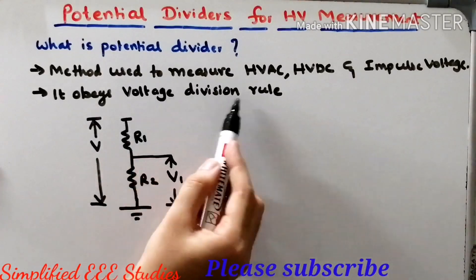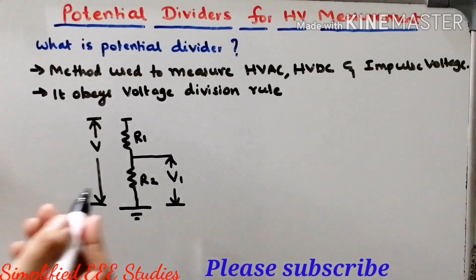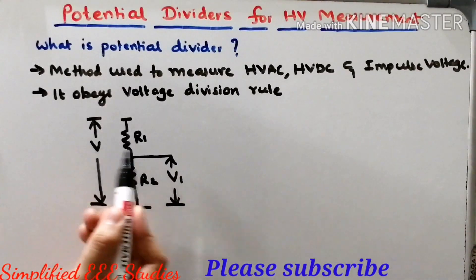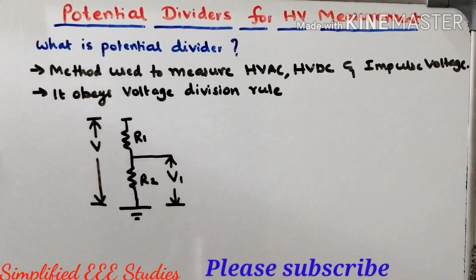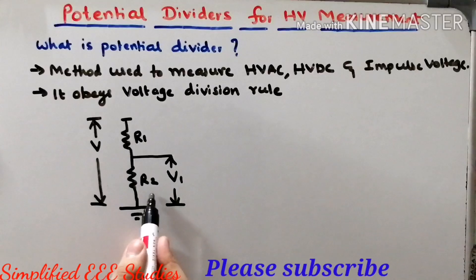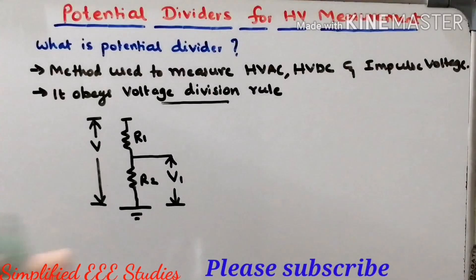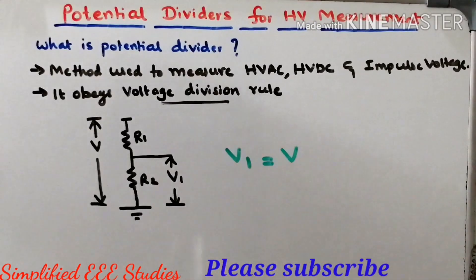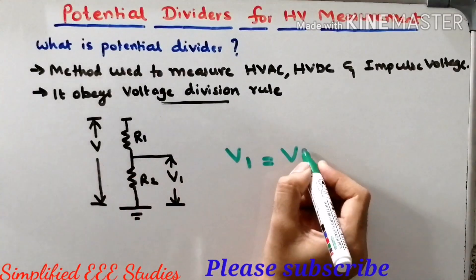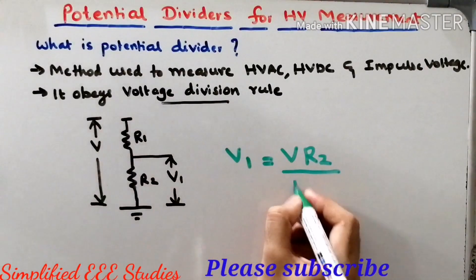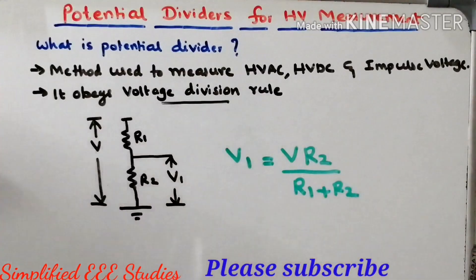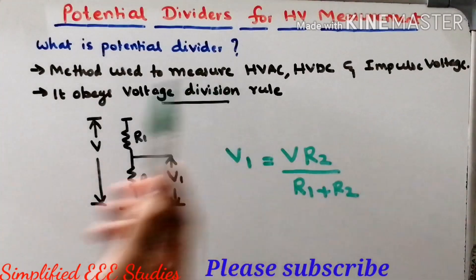Based on the principle of the potential division rule or potential division formula, consider a network shown here. The total voltage V has been divided with the help of resistors R1 and R2. To calculate the voltage across R2, we apply the voltage division formula: V1 equals V multiplied by R2 divided by the total resistance R1 plus R2. By using this formula we can calculate the voltage across R2. This is known as the voltage division formula or voltage division rule.